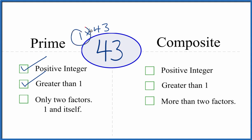Turns out that there aren't. So there are only two factors, and that makes 43 a prime number.